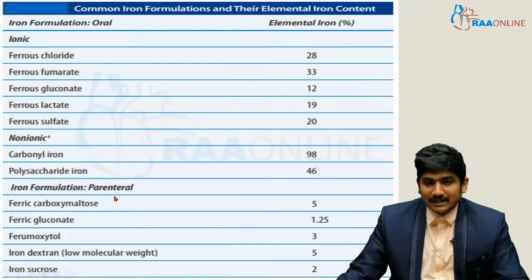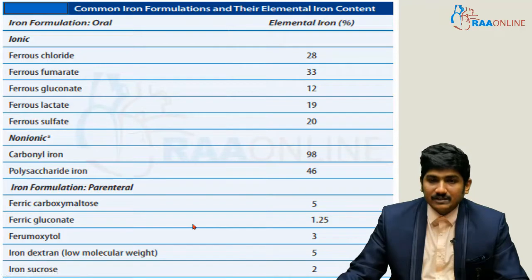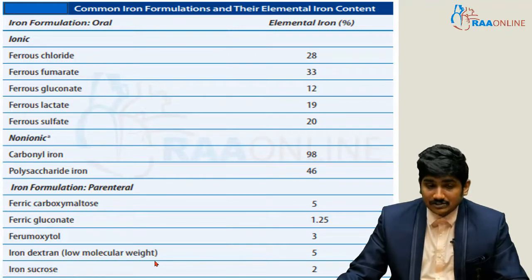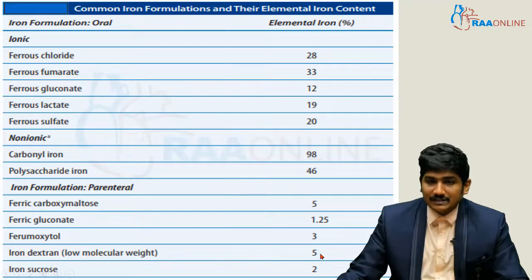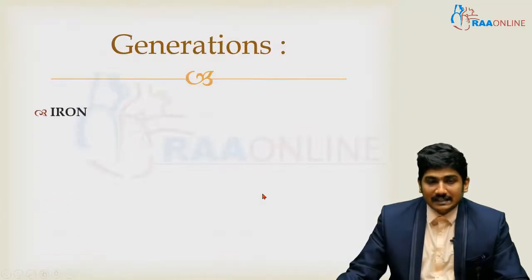For parenteral iron therapy: ferric carboxymaltose contains 5% elemental iron, ferric gluconate around 1.25%, ferumoxytol contains 3%, iron dextran (low molecular weight) contains around 5%, and iron sucrose contains around 2% elemental iron.